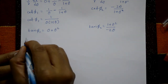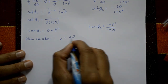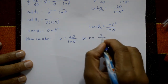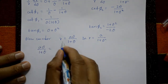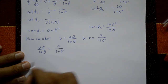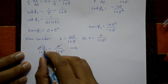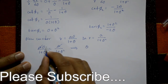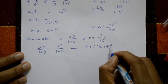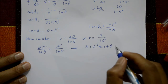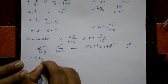Now consider the curves simultaneously: aθ/(1+θ) = a/(1+θ²). Cross-multiplying: θ(1+θ²) = 1+θ, giving θ + θ³ = 1 + θ, so θ³ = 1. Therefore θ = 1.